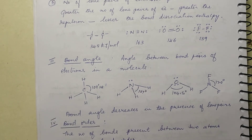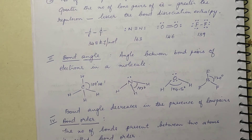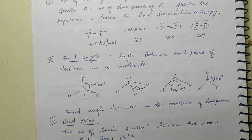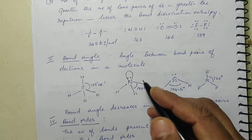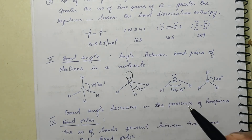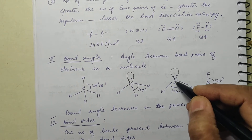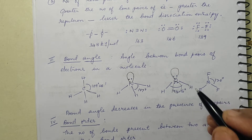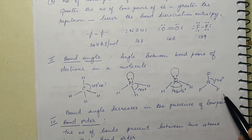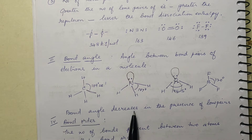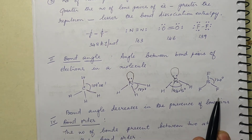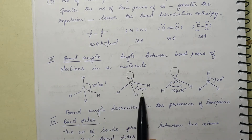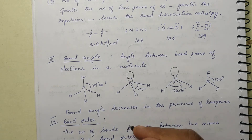Then comes bond angle. The angle between bond pairs of electrons in a molecule is called bond angle. This is a lone pair — the bond angle is always measured between two bond pairs, not involving lone pairs. In water there are two lone pairs, so the bond angle is 104.5°. In BF₃ it is 120°. Bond angle decreases in the presence of lone pairs: no lone pair gives 120°; no lone pair gives 109.28°; one lone pair gives 107°; two lone pairs give 104.5°.